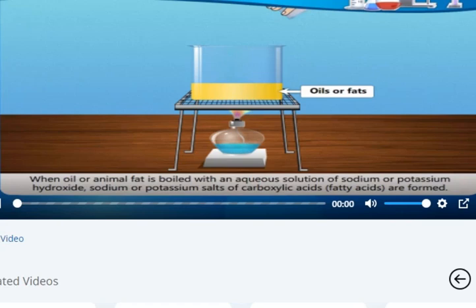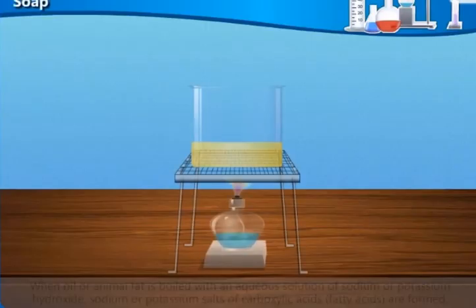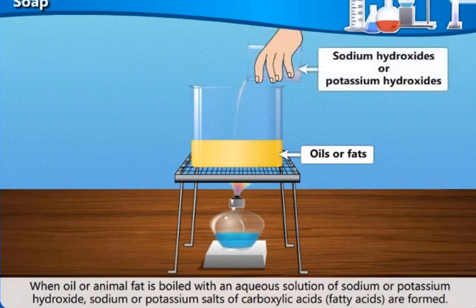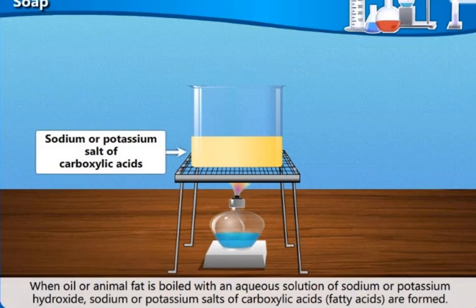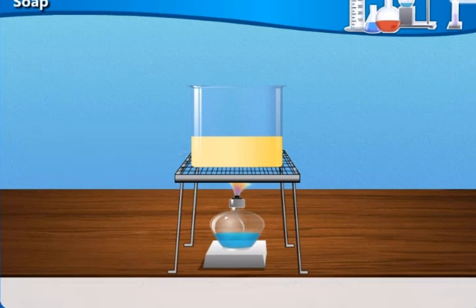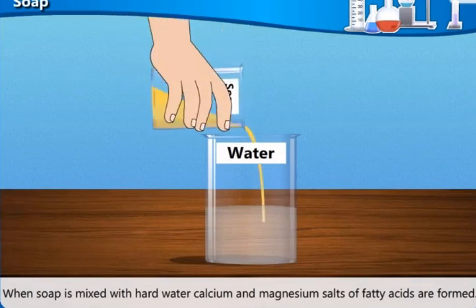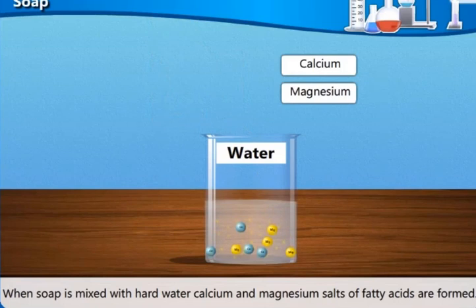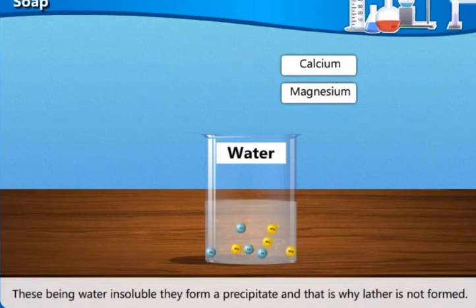When oil or animal fat is boiled with an aqueous solution of sodium or potassium hydroxide, sodium or potassium salts of carboxylic acids, fatty acids, are formed. These salts are called soap. When soap is mixed with hard water, calcium and magnesium salts of fatty acids are formed. These being water insoluble, they form a precipitate and that is why lather is not formed.